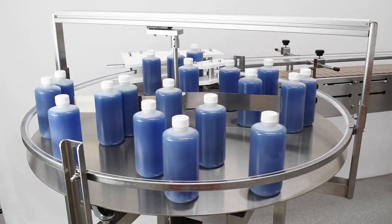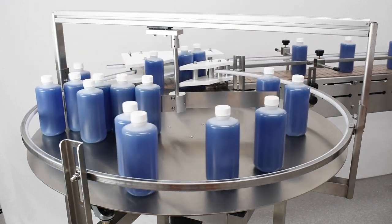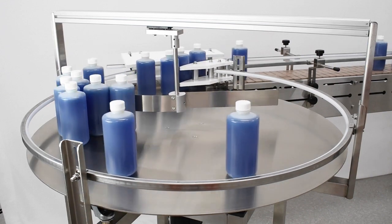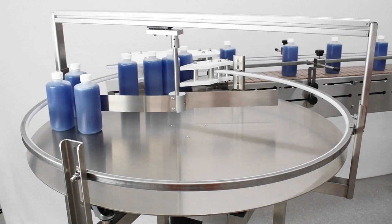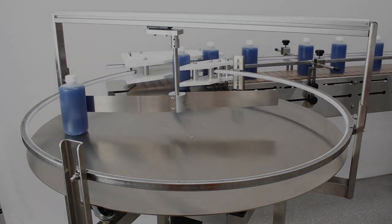If excess volume or disorganization of containers on your accumulation table is a problem, we recommend an unscrambler. This device is attached to the table and pushes containers to the outer edge of the table to be picked up. For more information on installing your unscrambler, please see our video tutorial on the subject.